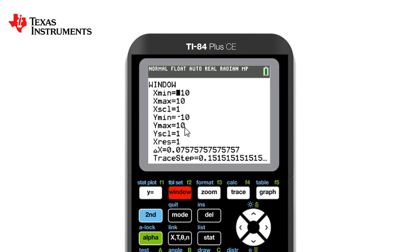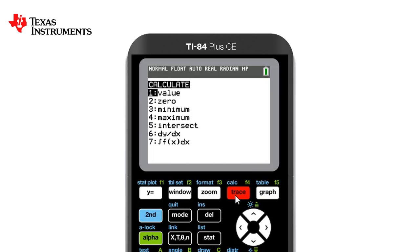If we go back into the calculate setting again, we can see that number three is the minimum and four is the maximum. The process to find these two values is the same as what we did for zero. But number five is the intersect. This will tell us where two graphs cross.